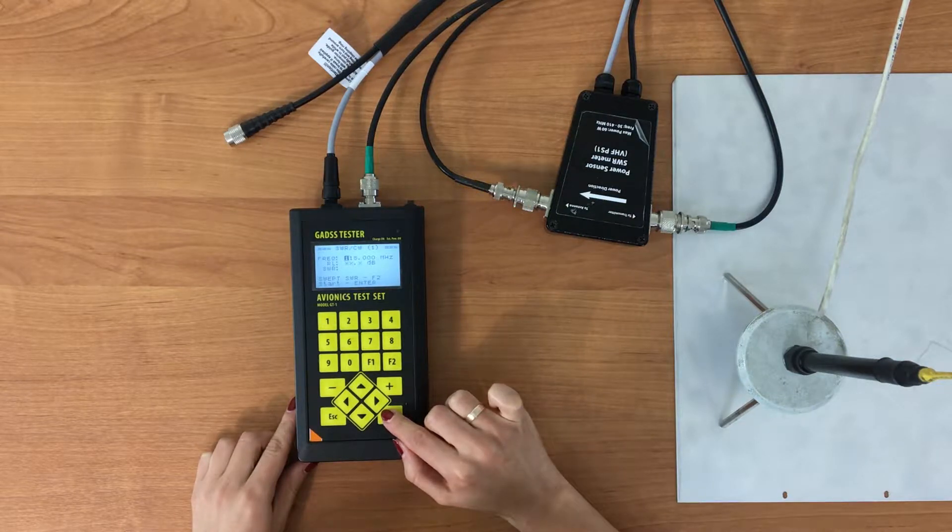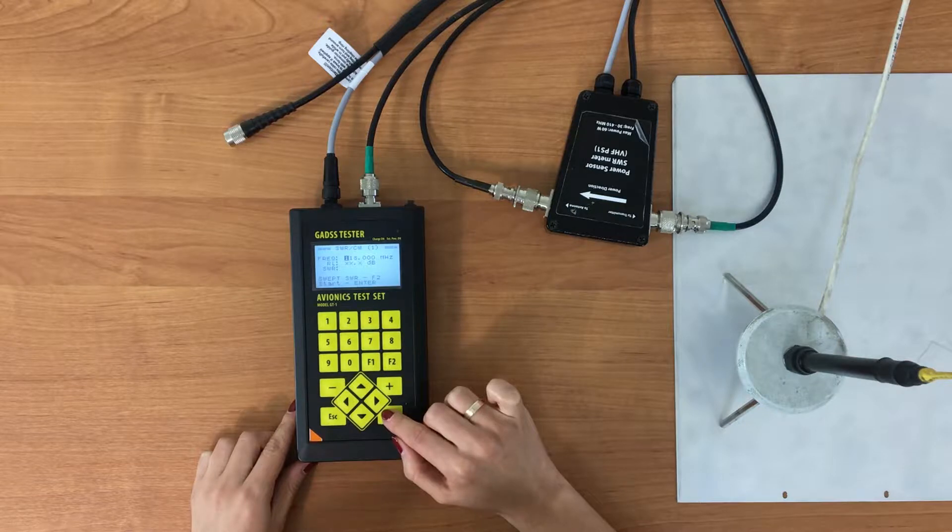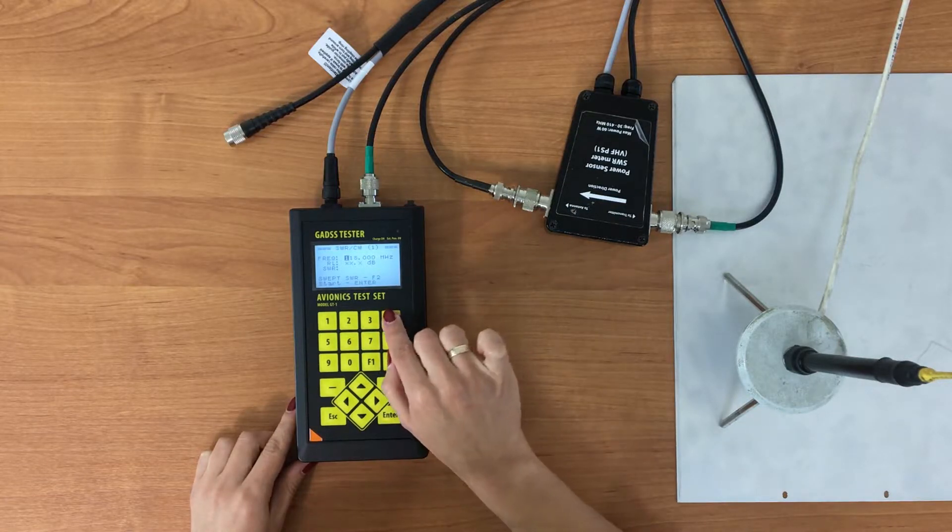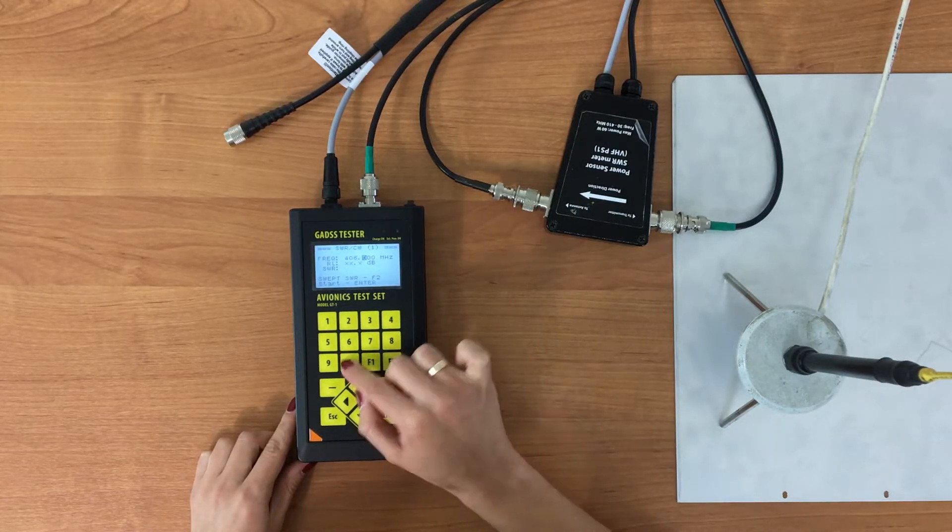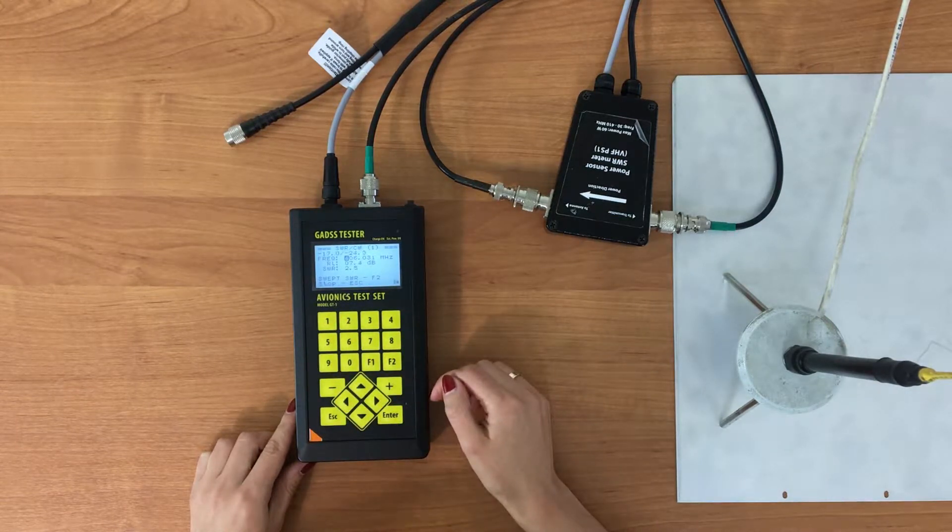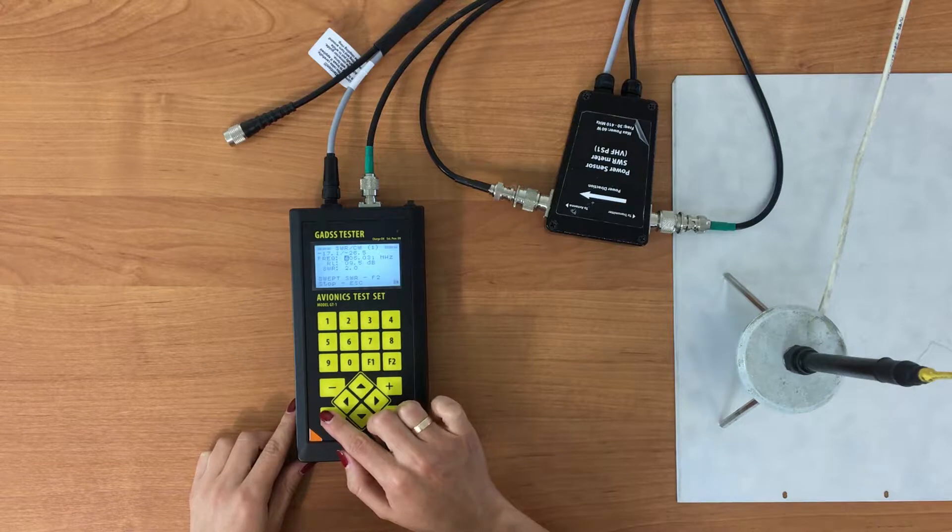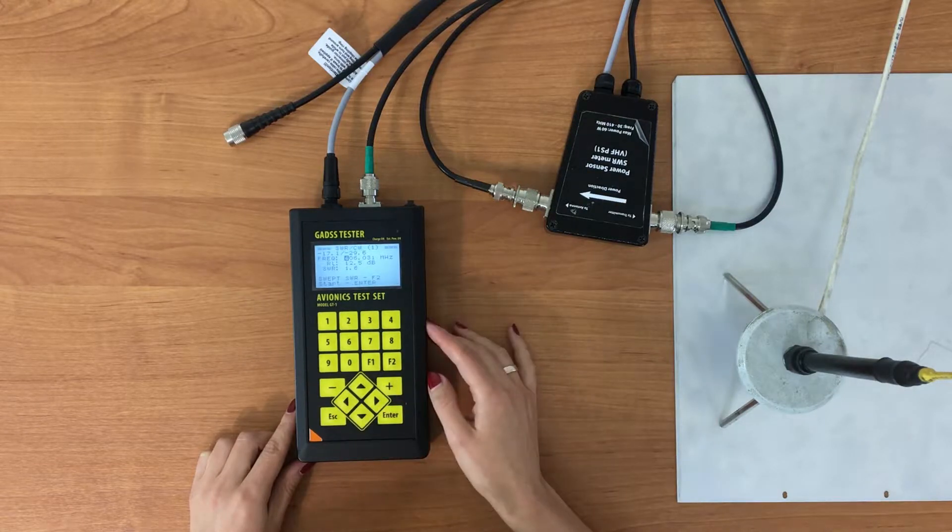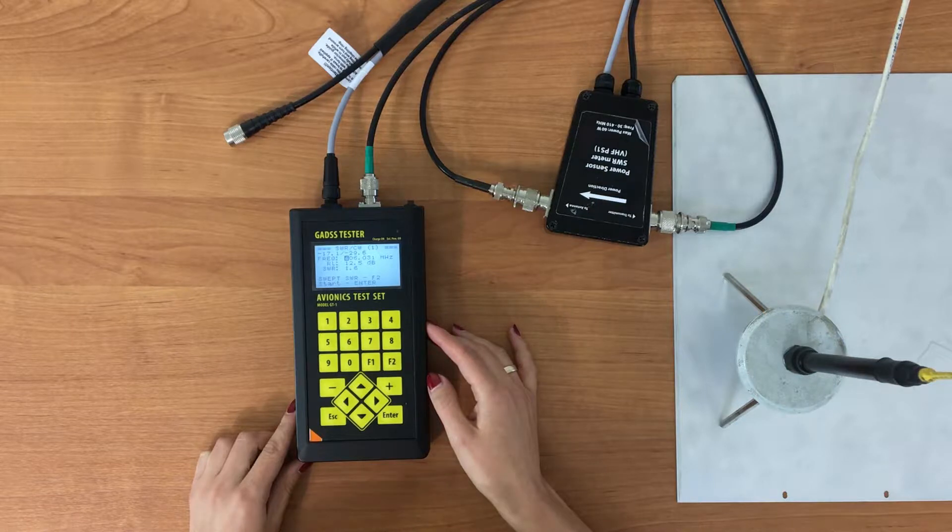Here input the carrier of the tested frequency. First it will be 406.31 MHz. Press ENTER to start measurements. Press ESC to STOP. We see SWR 1.6. It's good result.